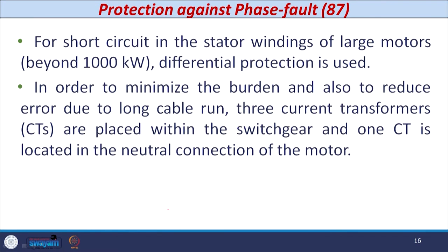The next phenomenon is protection against short circuit — basically phase-to-phase faults — and the relay number given is 87. For short circuit in the stator winding of large induction motors (beyond 1000 kW), differential protection is used. Whereas for small or medium range induction motors where differential protection cannot be used, IDMT relays or instantaneous relays can be used because these relays are cheaper than the differential relay.